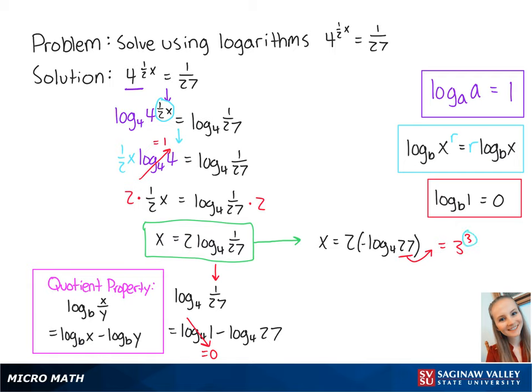So if we bring the exponent down, we get x equals negative 2 times 3 times the log base 4 of 3. Multiplying this out gets us x equals negative 6 times the log base 4 of 3. This is an alternate answer.